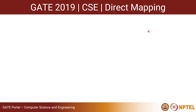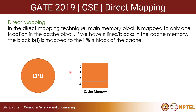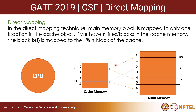In direct mapping, a main memory block is mapped to only one location in the cache. If we have n lines in the cache, block bi is mapped to the (i mod n) block of the cache. For example, with a cache having 2 blocks (b0, b1) and main memory having 4 blocks (b0–b3): b0 and b2 map to block 0 (0 mod 2 and 2 mod 2), while b1 and b3 map to block 1 (1 mod 2 and 3 mod 2). This is direct mapped cache.